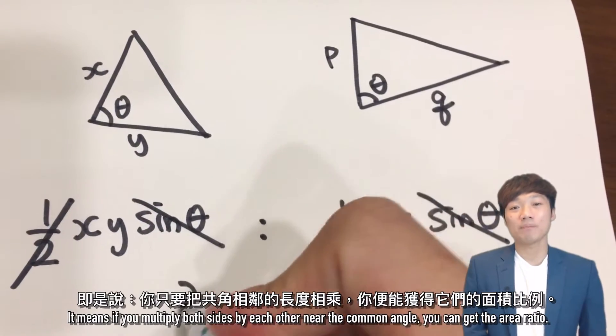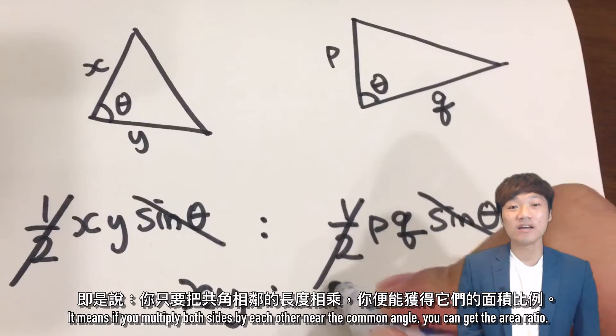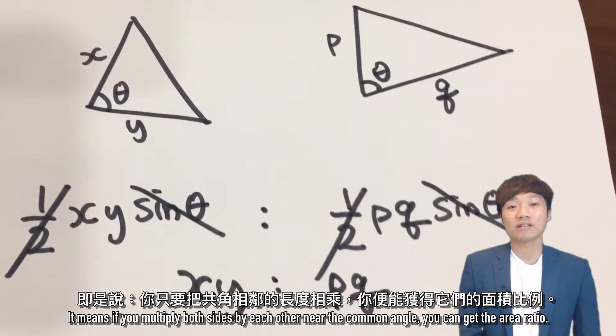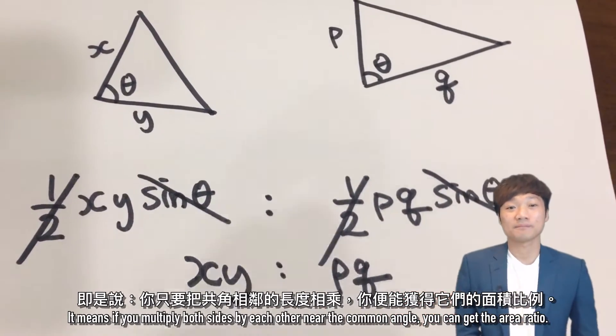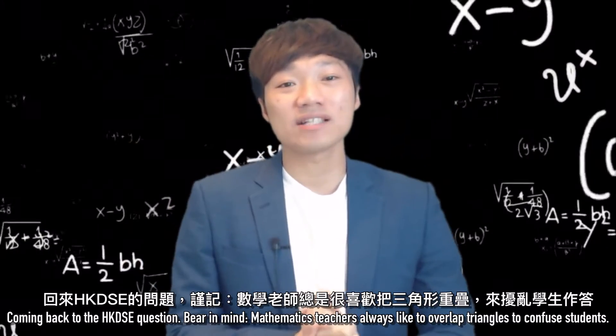It means if you multiply both sides by each other near the common angle, you can get the area ratio. Coming back to the HKDSE question,